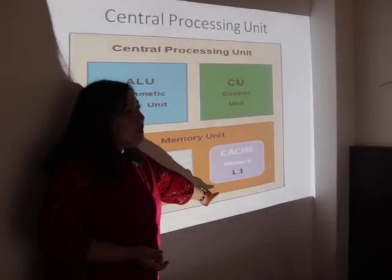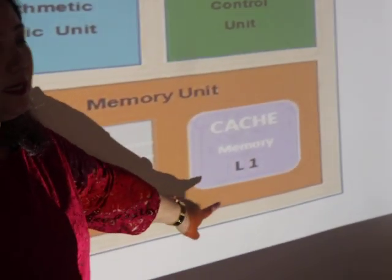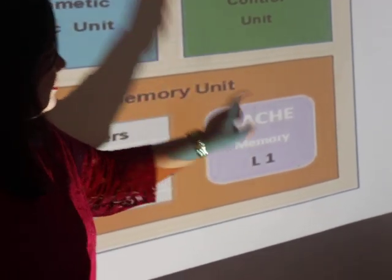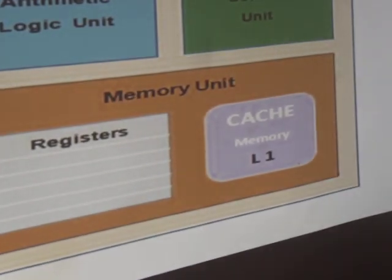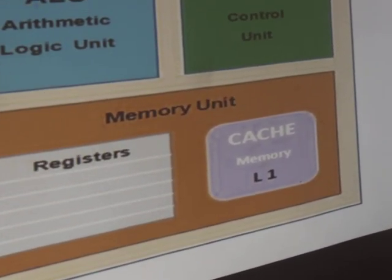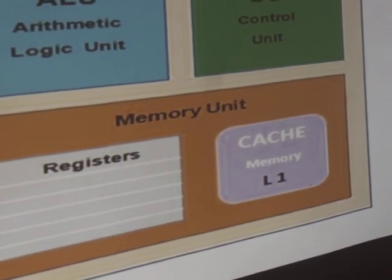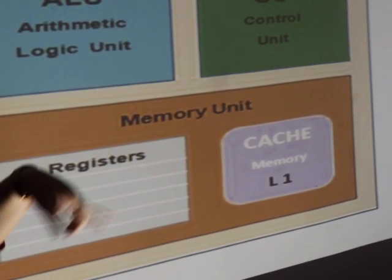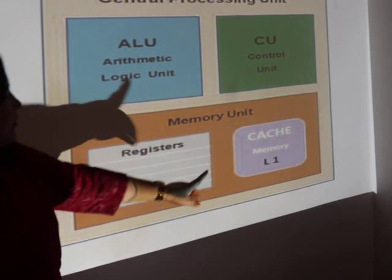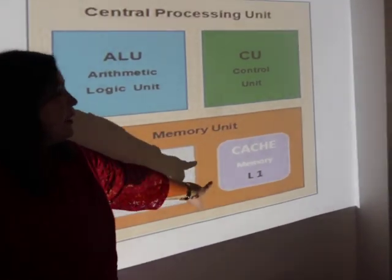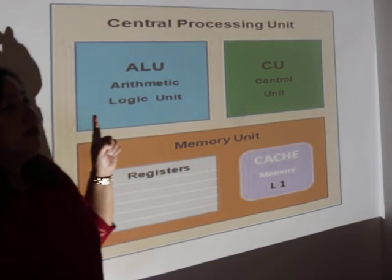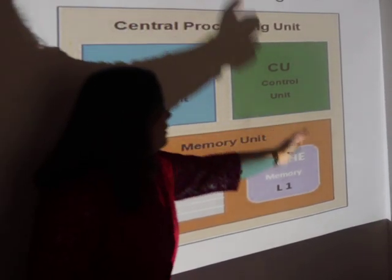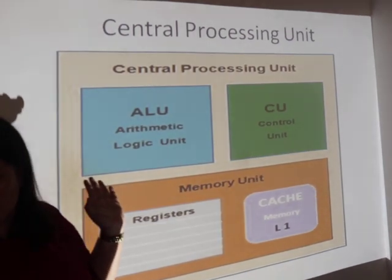Another part of the memory unit is the cache memory. Cache memory is a very high-speed memory. It stores only the frequently used data and instructions used by the CPU, hence speeding up the main memory. The cache unit can be connected directly to the CPU chip or it can be connected separately via a bus connection. So this is the processing part of the computer.